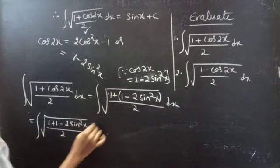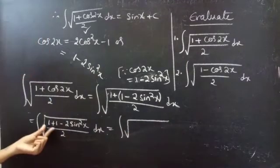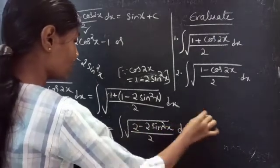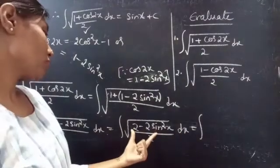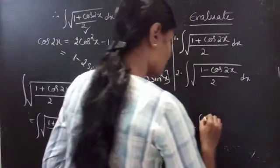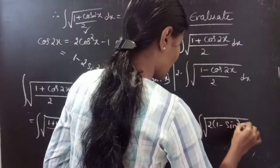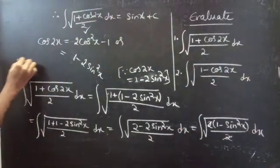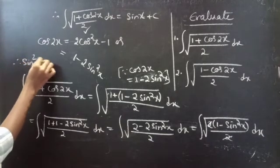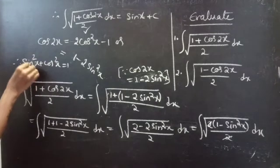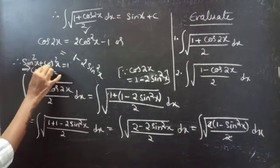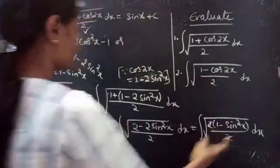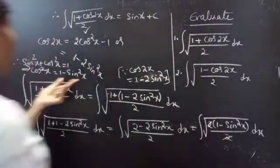Removing the brackets, this equals the integral of square root of (1 plus 1 minus 2sin²x) divided by 2, dx. In the numerator we have 2 minus 2sin²x. Taking 2 as common, we get the integral of square root of 2 times (1 minus sin²x) divided by 2, dx. The 2s cancel. Since sin²x plus cos²x equals 1, we have cos²x equals 1 minus sin²x.